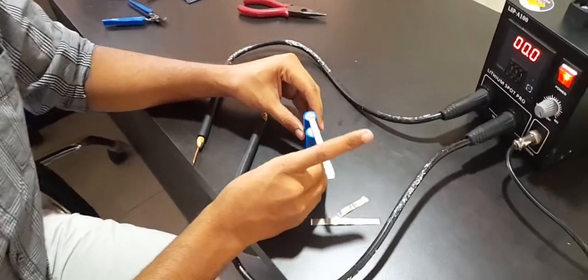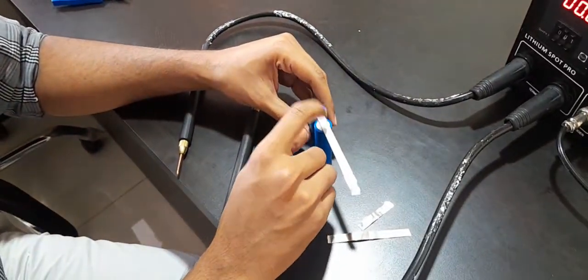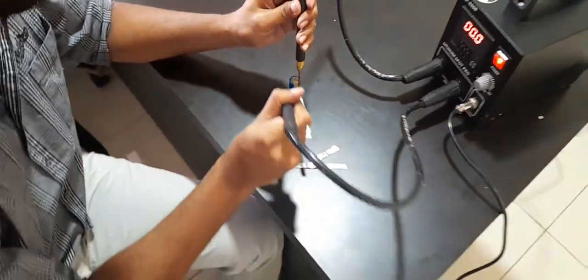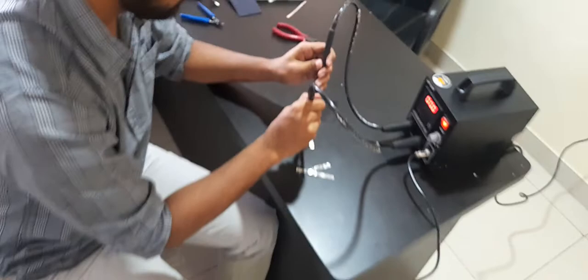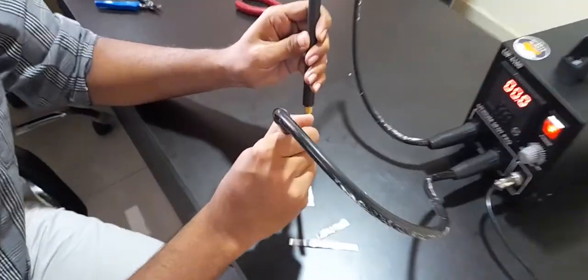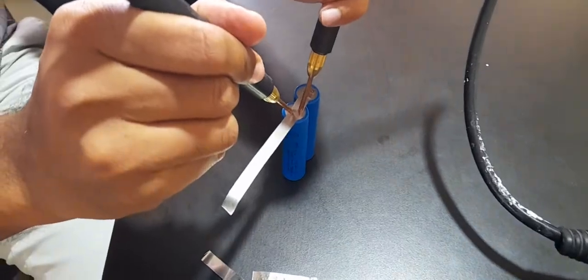Let me just quickly place another cell nearby and I'll show you how it is being welded. I just have to place the probes in the correct place and press the trigger button. As you can see, the weld is over. Let me do one more quick.